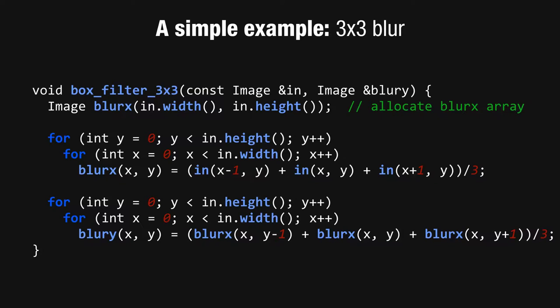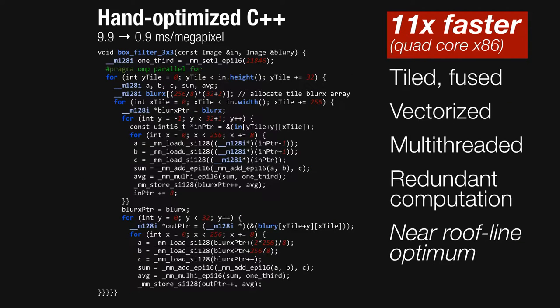If we want to do a simple two-pass box filter, we could write C++ code like this — just two sets of loops over the image where the first computes a horizontal blur and stores it in a buffer, and the second vertically blurs that to produce the output. A hand-optimized version of this is over an order of magnitude faster. It's parallel, vectorized, tiled, and fused. We had to restructure the loops, introduce redundant computation on the tile boundaries, and change the data layout. I'd argue it's a complete mess, given that all we're doing is averaging 3x3 pixels. But under the covers, it's really just the same basic algorithm reorganized to optimize for parallelism and locality. Currently, no off-the-shelf compilers can do this full transformation, so you have to do it by hand.